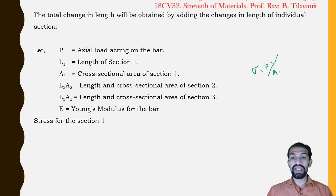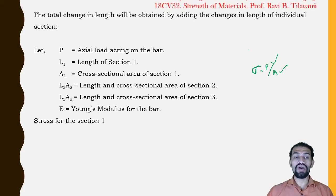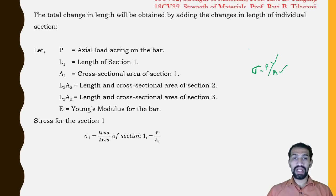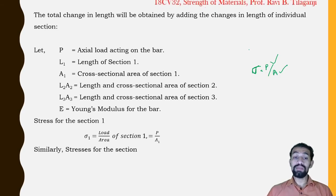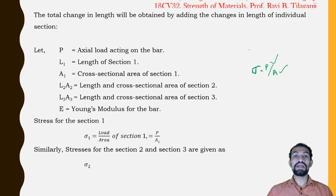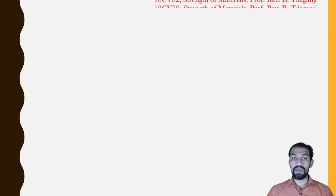Since P and A1 are known, we can easily calculate stress for each section. Stress for section 1: σ1 = P/A1. Similarly, stress for section 2: σ2 = P/A2, and stress for section 3: σ3 = P/A3.